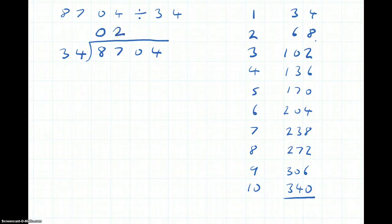And two 34s are 68. And now we just take away 68 from 87. We need to borrow. So that becomes 7.